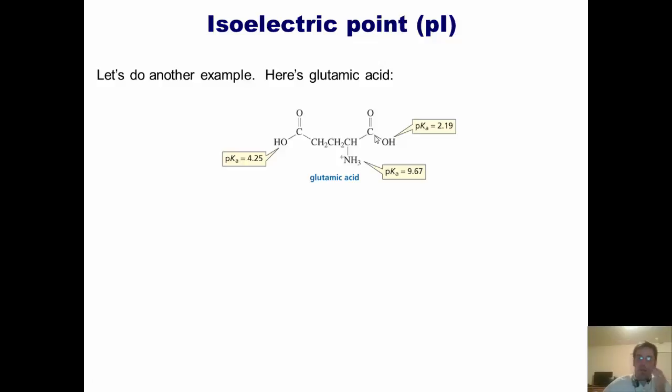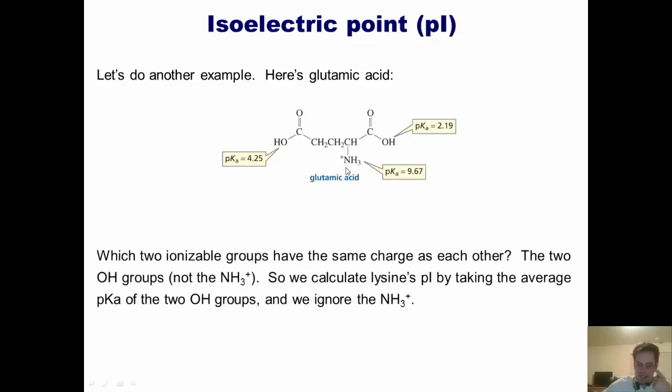So for lysine, we calculate the isoelectric point by taking the average pKa values of the two OH groups, and we ignore the NH3+. And now I reemphasize what I said in the previous slide. The isoelectric point is the pH at which this molecule has a net average charge of zero.